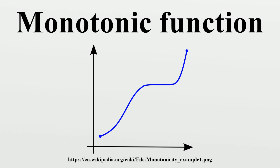It is called monotonically increasing if for all x and y such that x ≤ y one has f(x) ≤ f(y), so it preserves the order. Likewise, a function is called monotonically decreasing if whenever x ≤ y, then f(x) ≥ f(y), so it reverses the order.